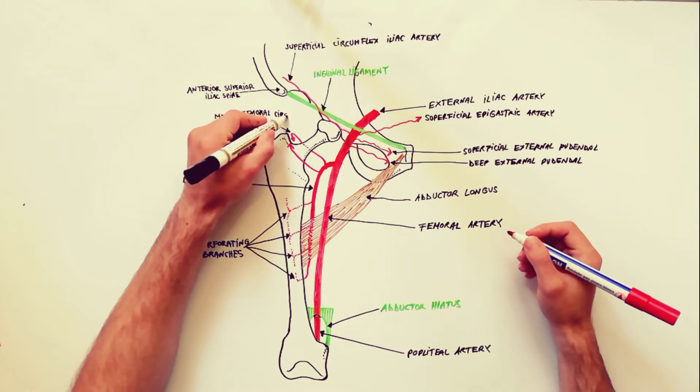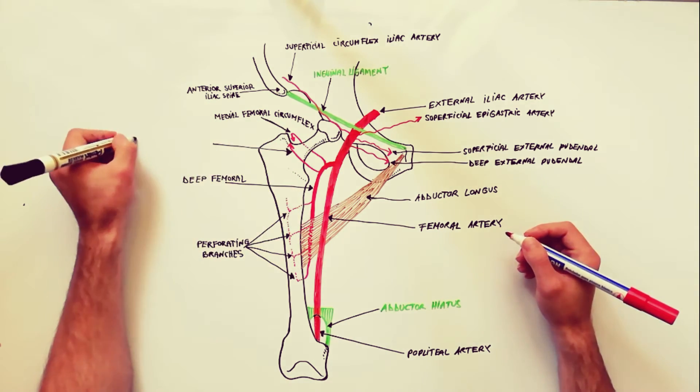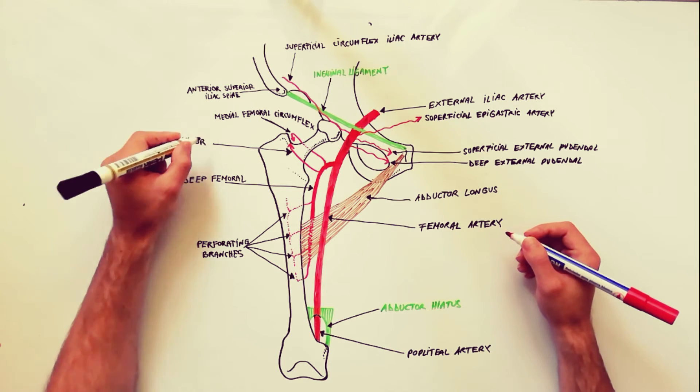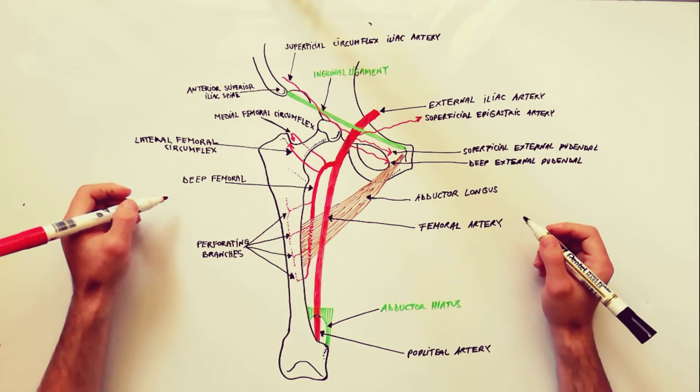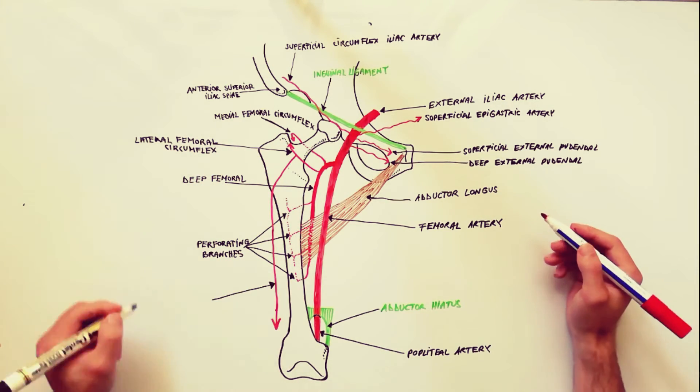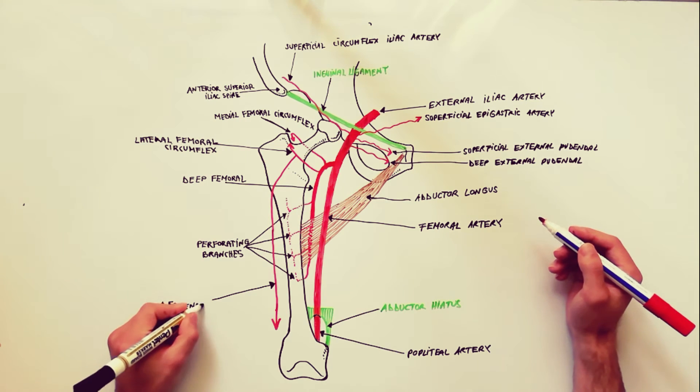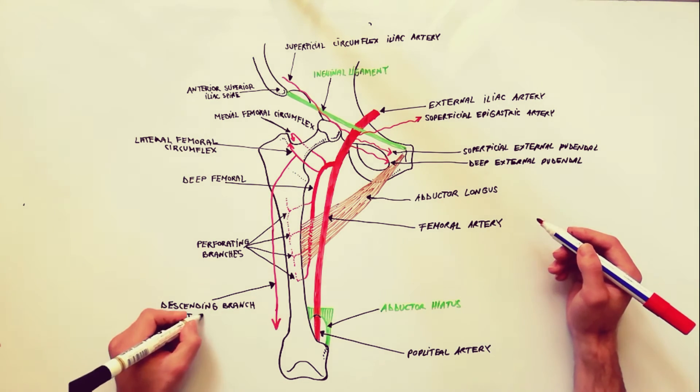The deep femoral artery at its origin gives off the medial and lateral femoral circumflex arteries. From the lateral femoral circumflex, we have a long descending branch called the descending branch of the lateral femoral circumflex, which will aid the blood supply to the knee joint.